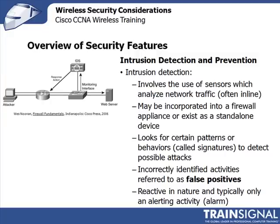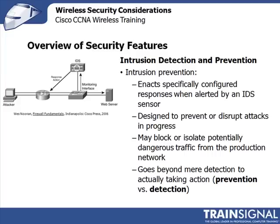Sometimes something that's not an attack is reported as one — this is called a false positive, where something may fit the profile of a signature but isn't necessarily an attack. Intrusion detection is reactive in nature; it simply puts out an alarm. Intrusion prevention goes a step further: based on the supposed or actual attack, it uses specifically configured responses. It can disrupt attacks in progress, prevent attacks, and block or isolate potentially dangerous traffic from the production network — going beyond detection to actually taking action. These are referred to as IDS and IPS.